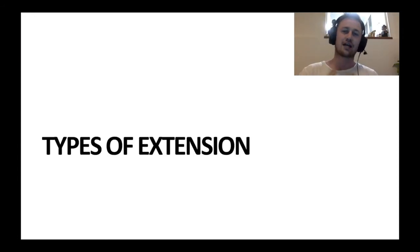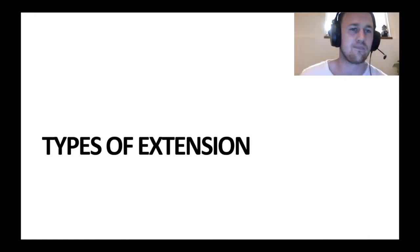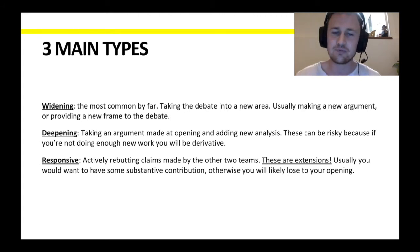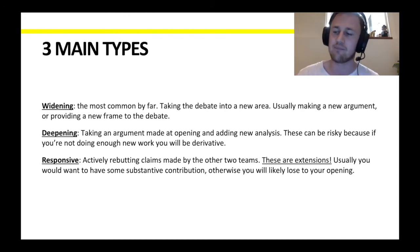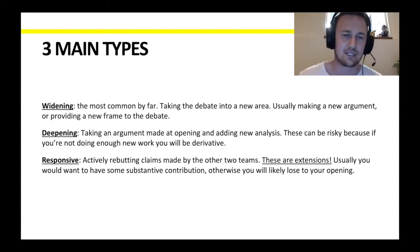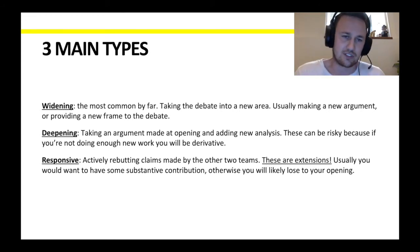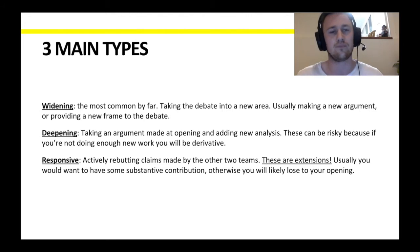Now let's look at what sorts of things we can do with our extensions. Broadly speaking, there are three main types. The first and most common is what I'd call a widening extension — where you take the debate into a whole new area, make a new argument, or provide a new frame. The second is a deepening extension, where you take an argument made at your opening and add new analysis. These are also called analysis extensions, and you need to be careful because if you're not doing it well, it might look derivative.